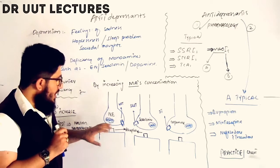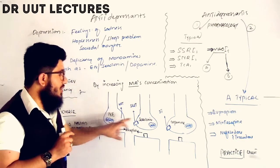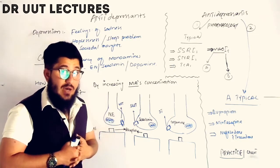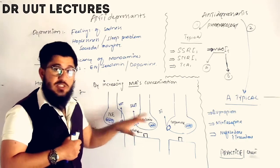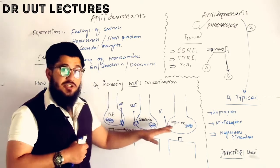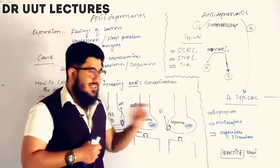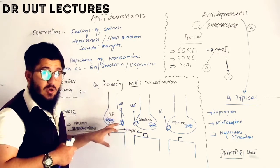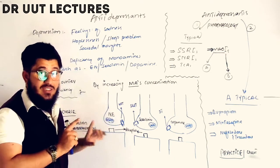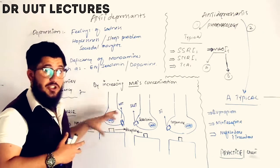To increase neurotransmitter concentration, we focus on two sites: first, the reuptake transporters, and second, the monoamine oxidase enzymes. If we block the transporters, neurotransmitters released into the synapse will not be reuptaken, increasing monoamine concentration in the synapse. If we inhibit monoamine oxidase, the stored neurotransmitters will not be broken down, also increasing their concentration. These are the two key strategies.